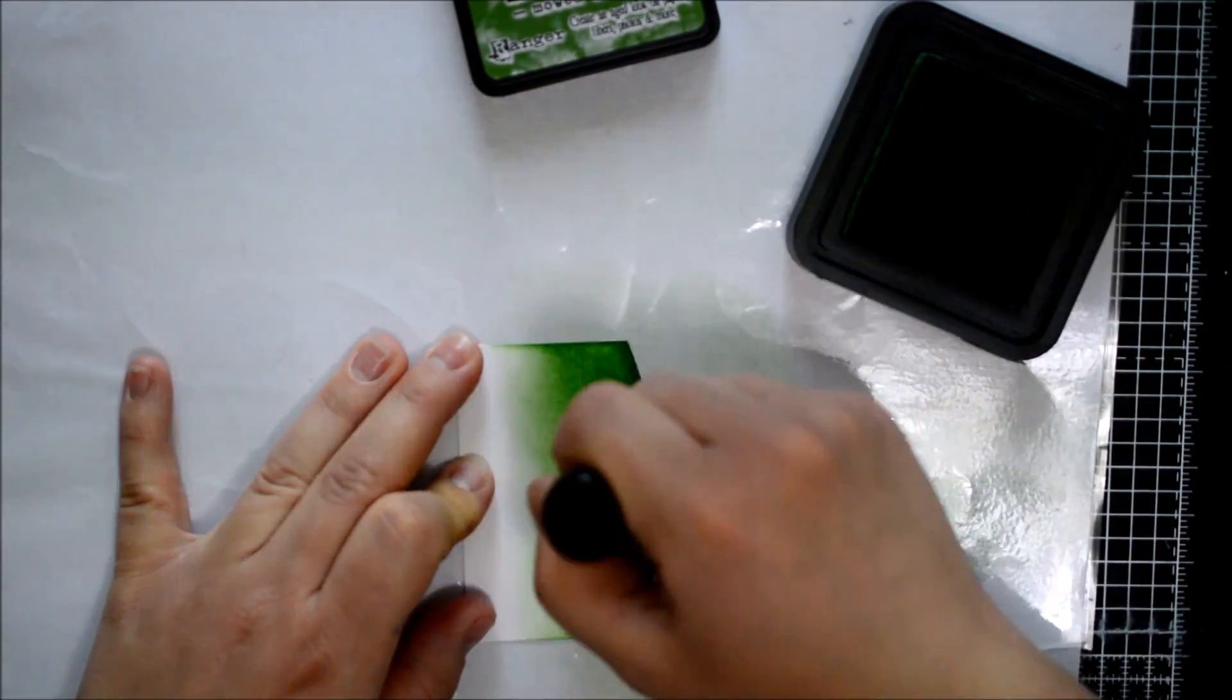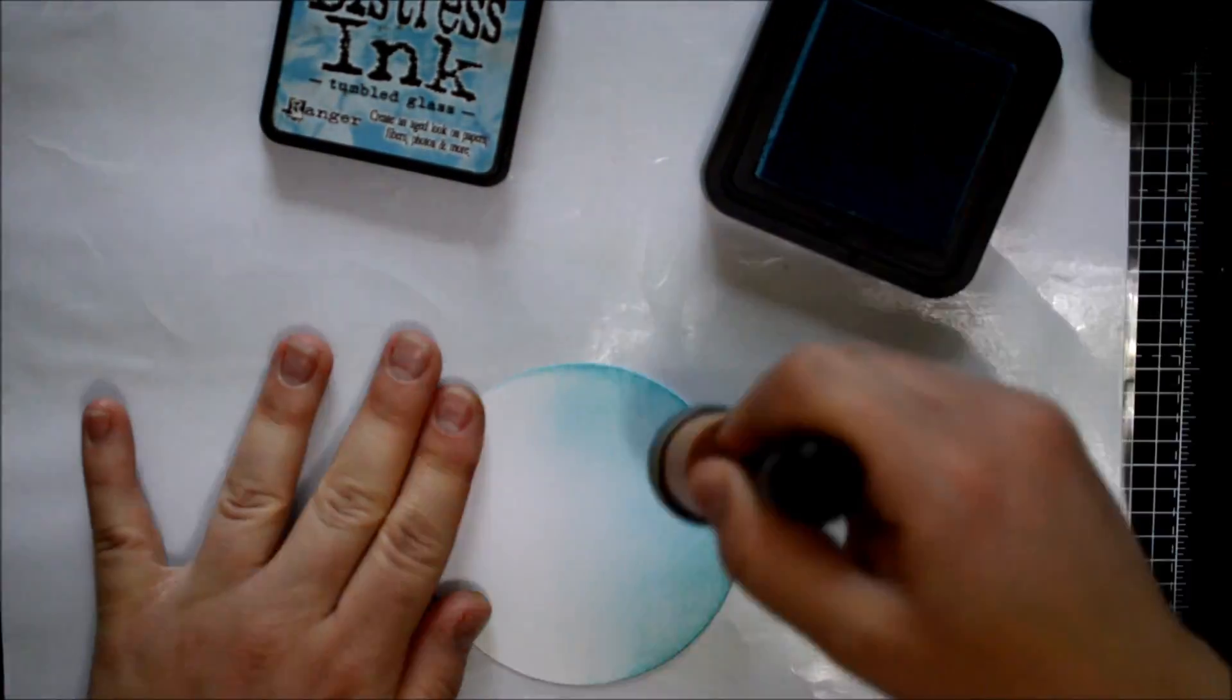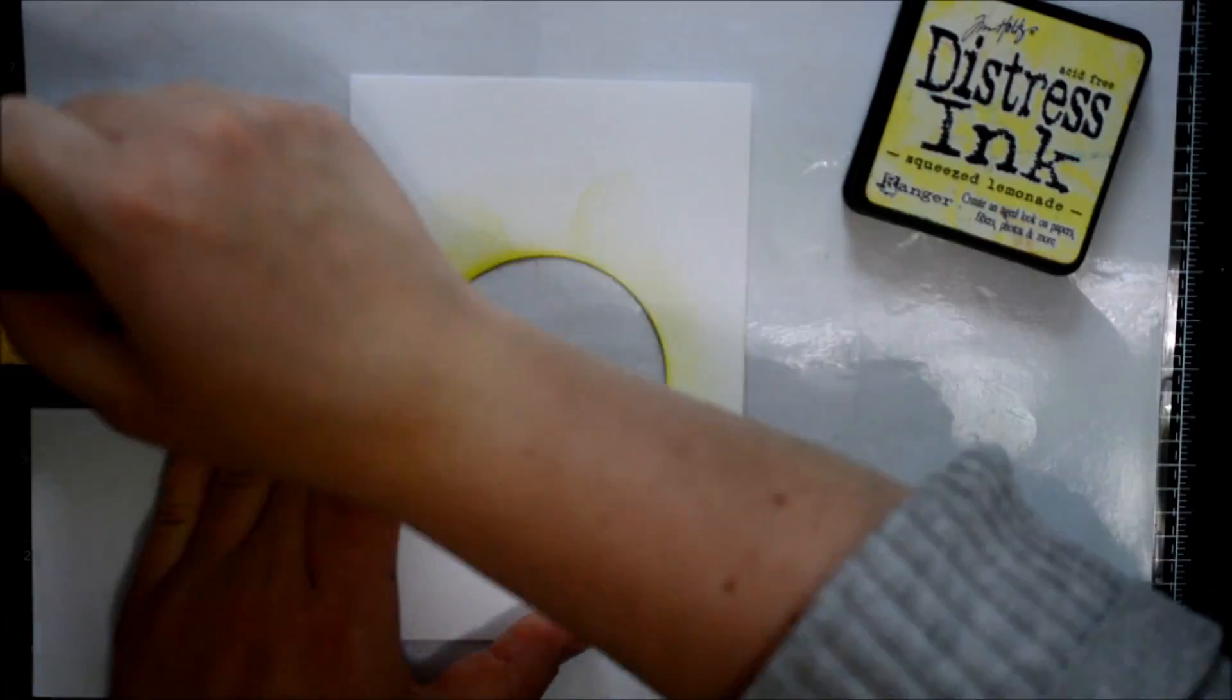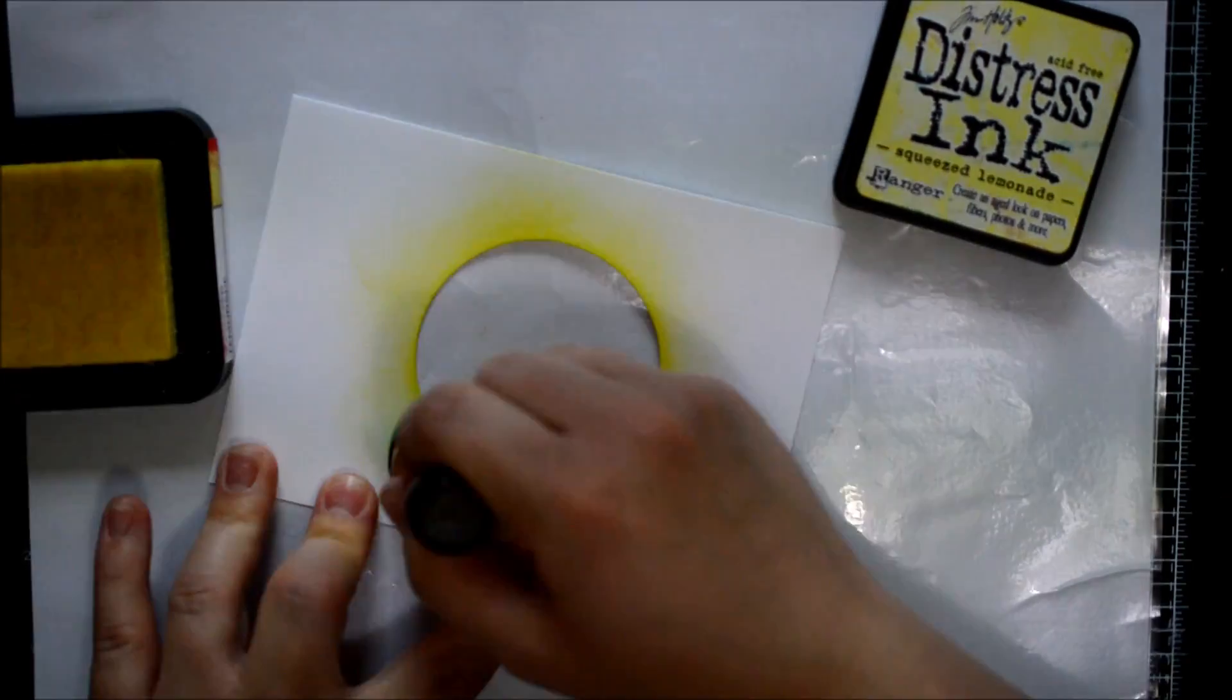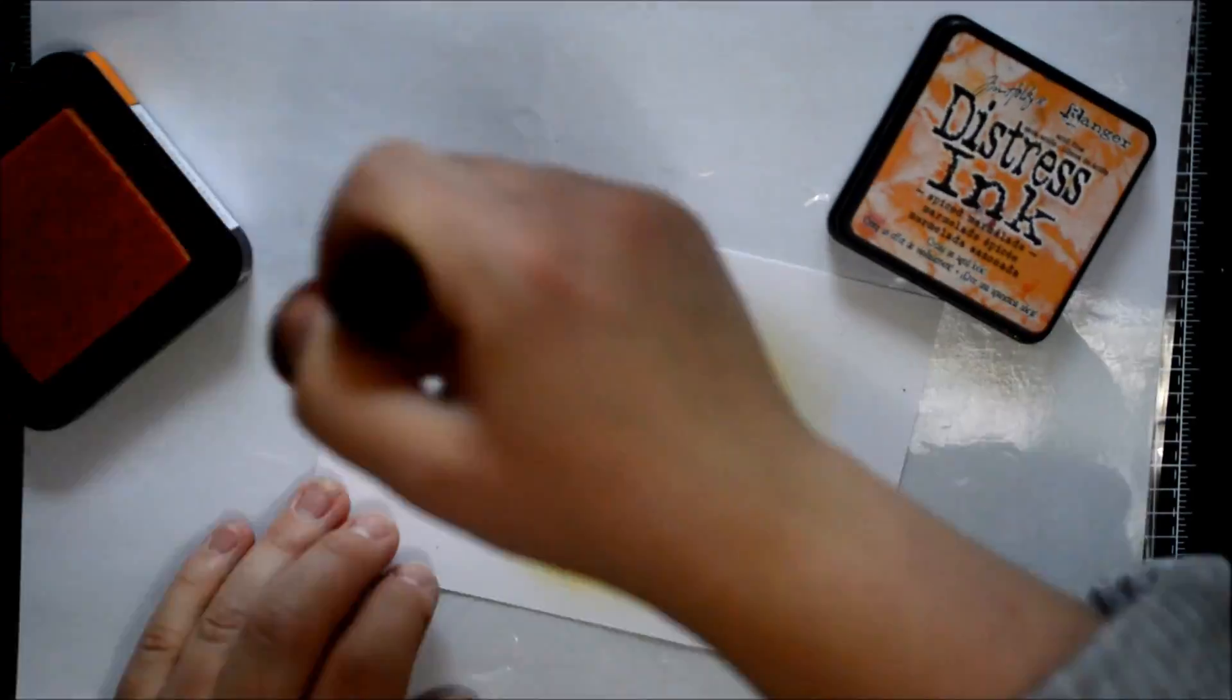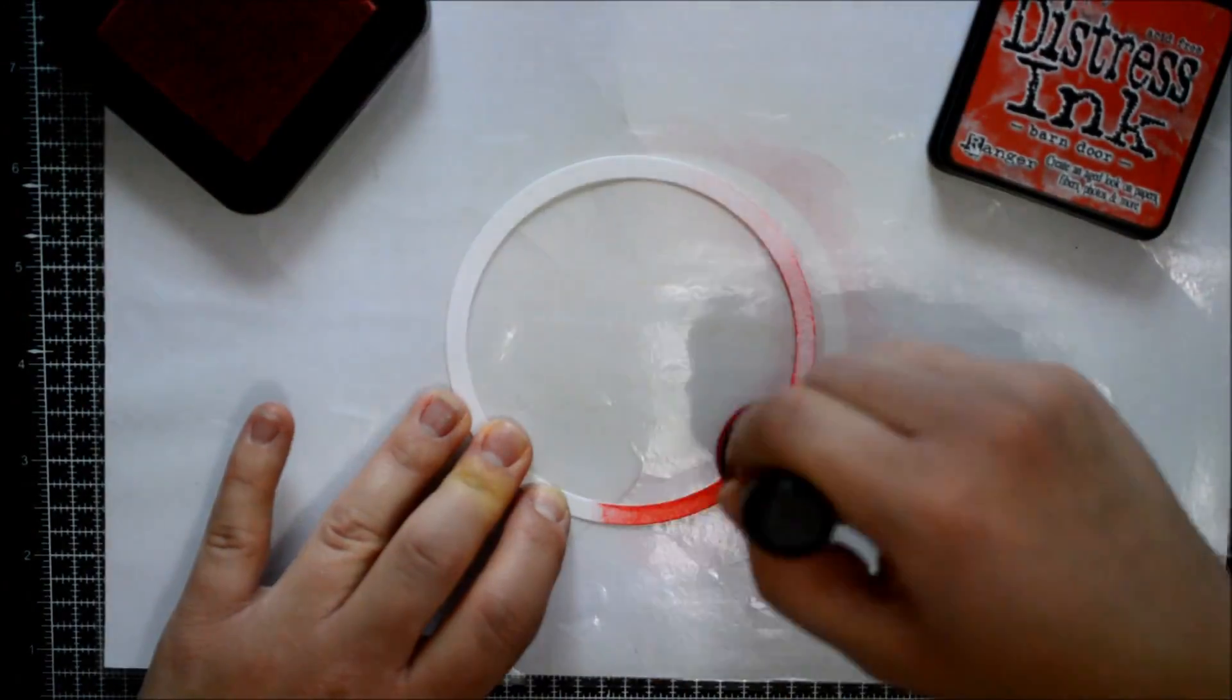I pre-cut all my pieces beforehand because I knew what design I was going for and it's easier for filming. I started ink blending with some Ranger Distress ink. I used Mowed Lawn, Tumbled Glass, Squeezed Lemonade, Spiced Marmalade and Barn Door, doing some very simple ink blending all around the edges.